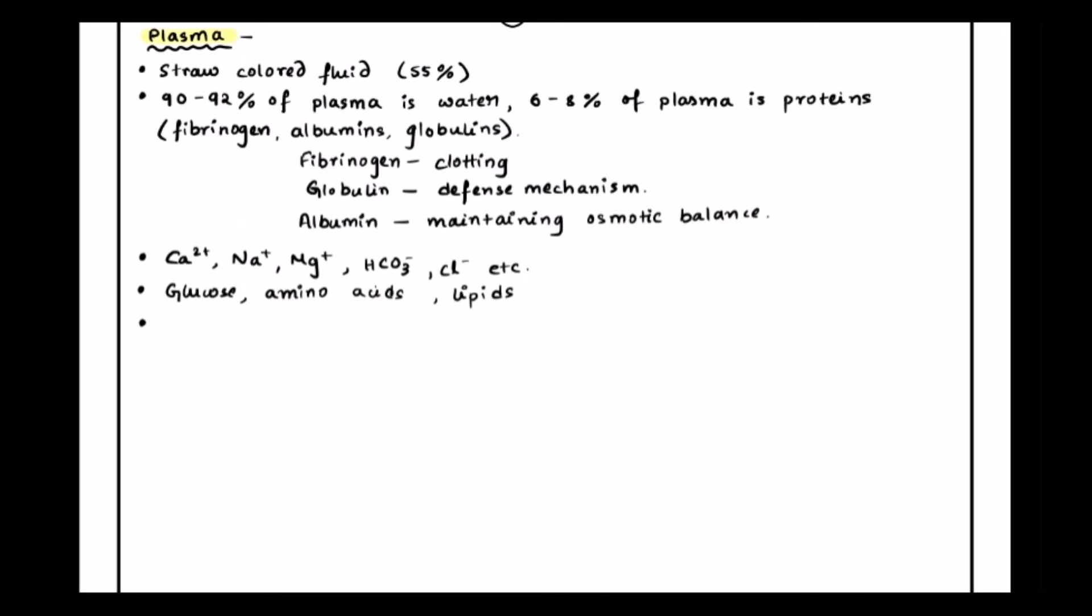Finally, the plasma also has something which is called the coagulation factors, which are of course present in its inactive form. Because you know, you do not want the blood to clot inside your body. They are only activated when they are exposed to the environment which is outside the body. When there is a cut, these factors become active from the inactive form.